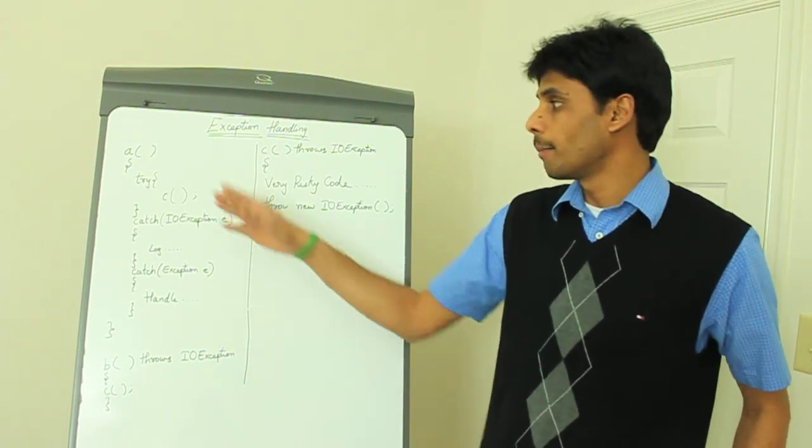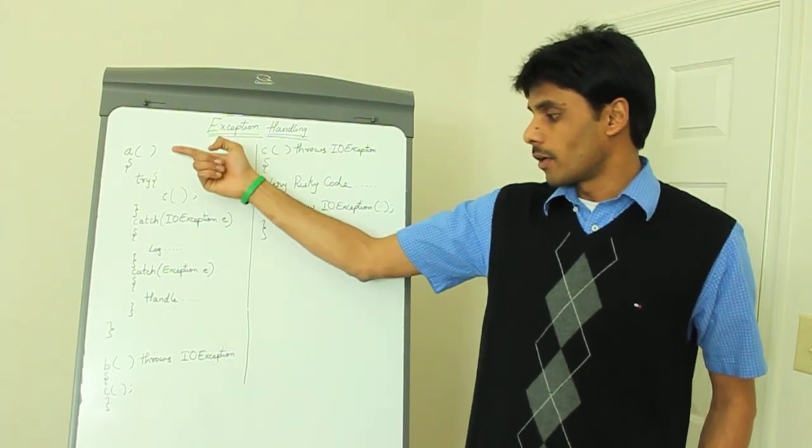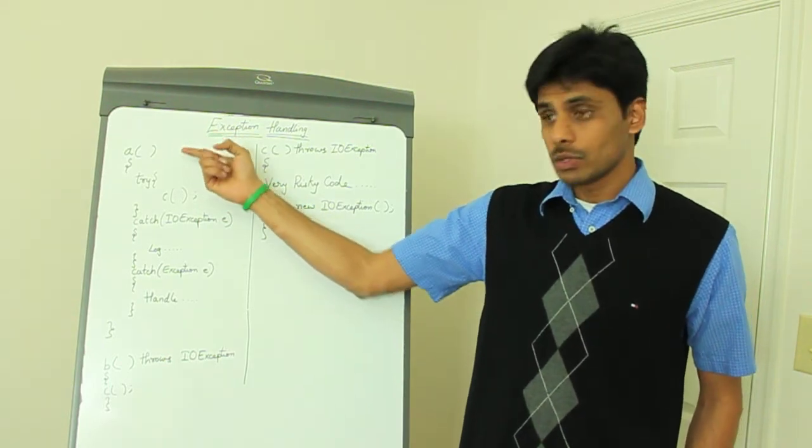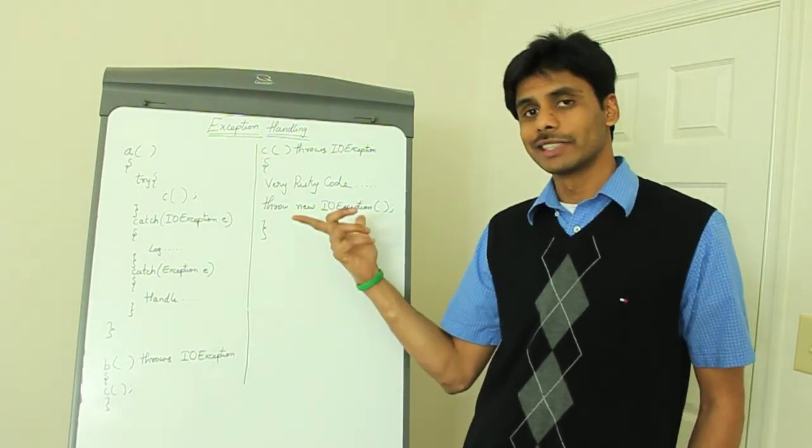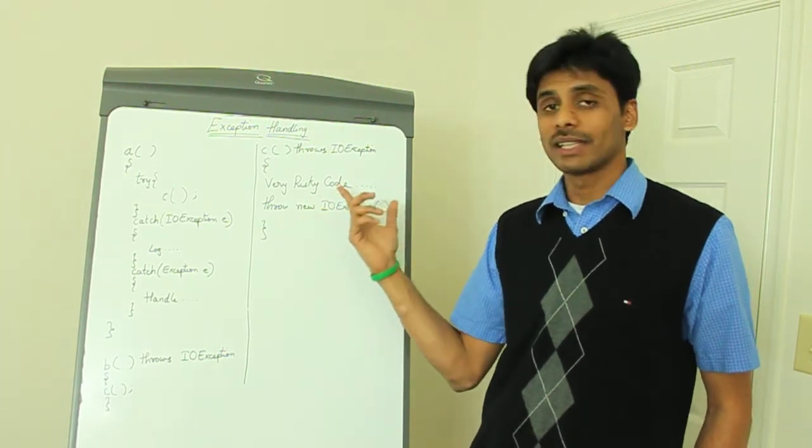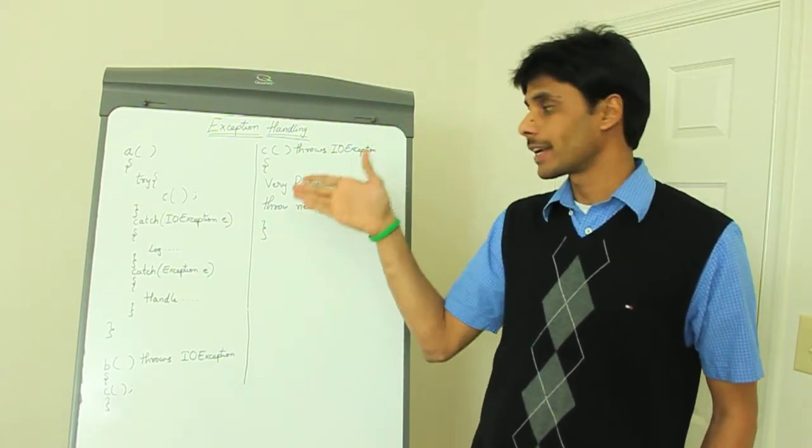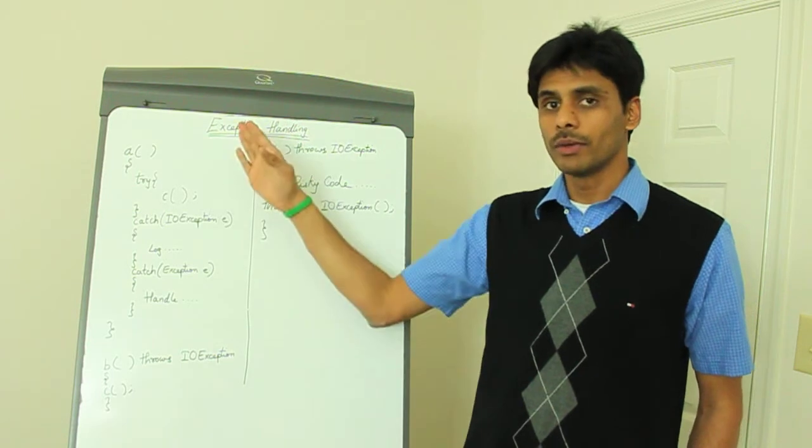Stack trace is nothing but a dump of all your method calls. Like if A was calling B and then if B was calling C and if the exception happens in C, you will have the stack trace starting from C all the way to A.